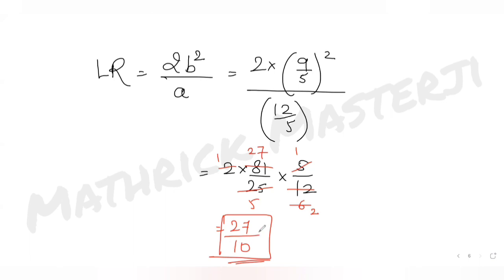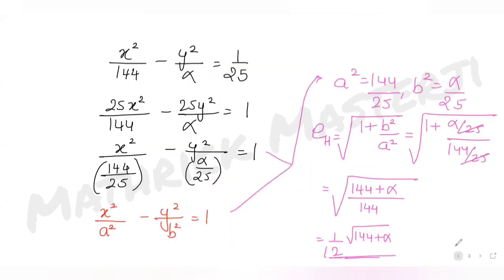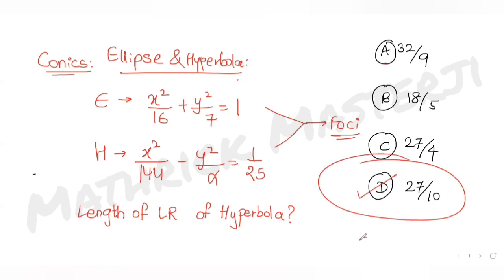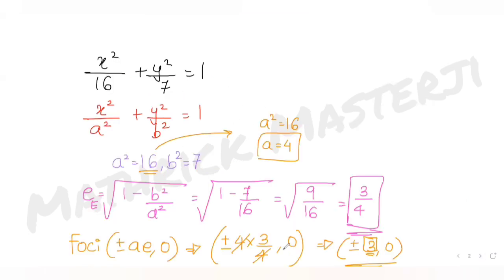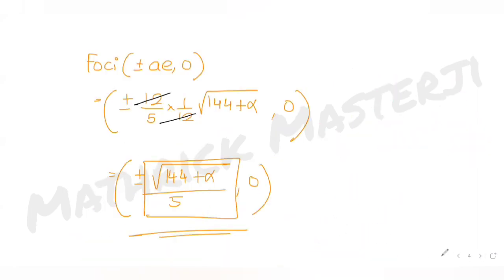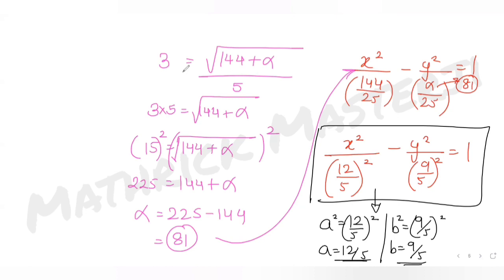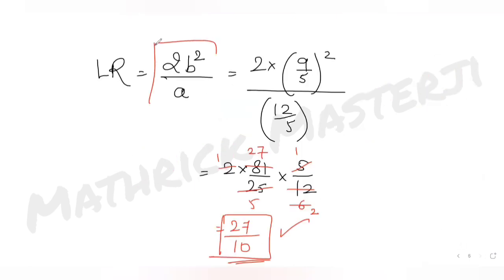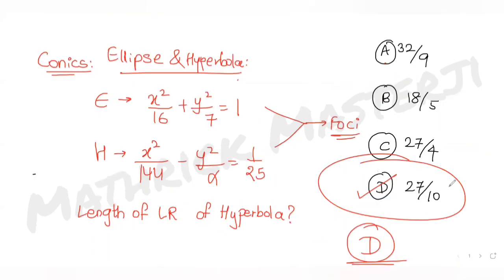The length of the latus rectum is 27/10, which matches option D — the correct answer. To summarize: I compared the ellipse and hyperbola equations to find their foci, equated them to get alpha = 81, substituted back into the hyperbola equation, and applied the latus rectum formula 2b²/a to get 27/10.